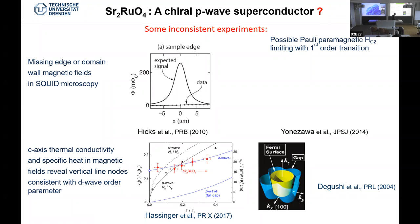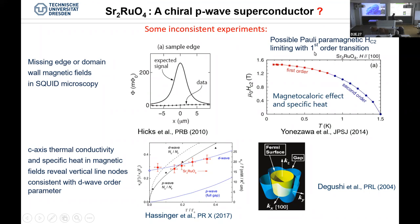Thermal conductivity measurements also point to the fact that there are line nodes in strontium ruthenate, which in the ideal px ± i·py state should not exist. In a triplet superconductor, the magnetic moment can align with the magnetic field. But close to the upper critical field H_c2, you go from second to first order transition, which points to FFLO physics in the system. The most consistent experiment was actually about the NMR Knight shift, where there is a change when going into the superconducting state.